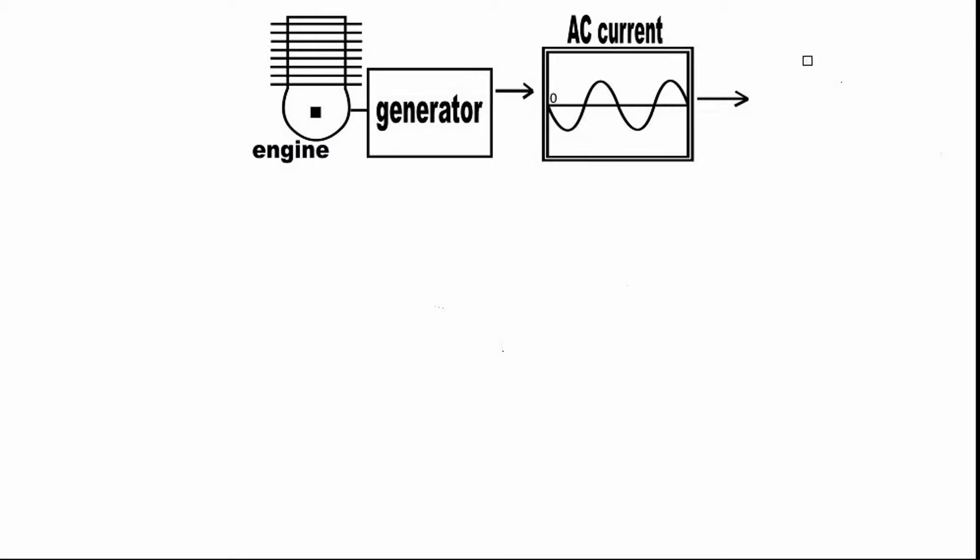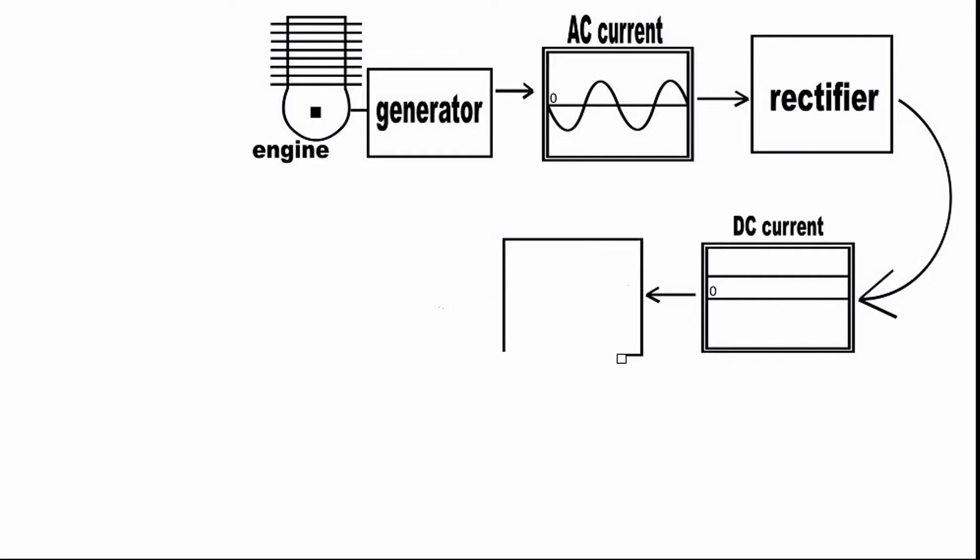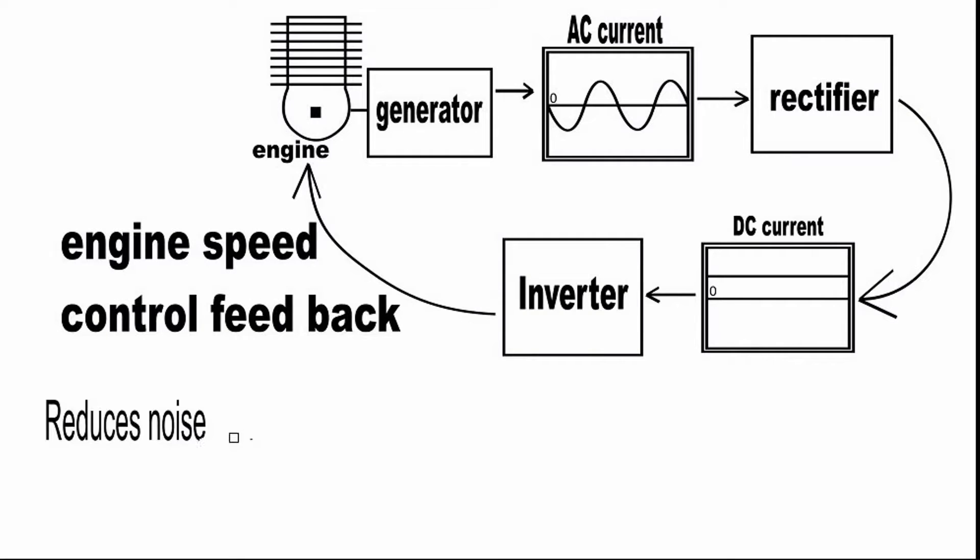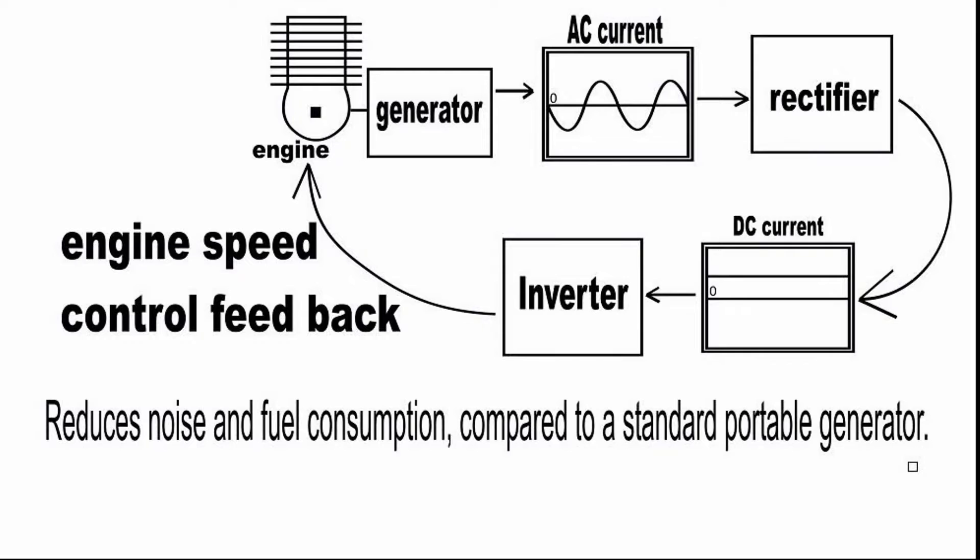In an inverter generator, the engine speed varies depending on the electrical demand, which significantly reduces noise and fuel consumption compared to a standard portable generator.